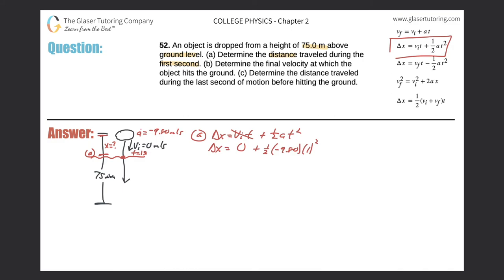The displacement is what we're looking for. The initial velocity was zero, so that whole term cancels. It's one-half times the acceleration, negative 9.80, times time squared — one second squared. One squared is one, so half of 9.8 is negative 4.90 meters. That's how far it travels in the first second. That takes care of part A.